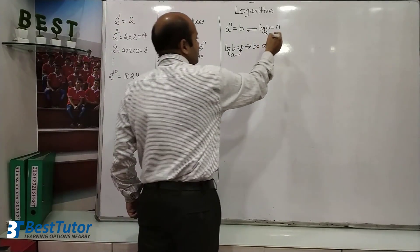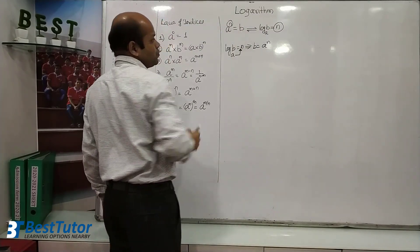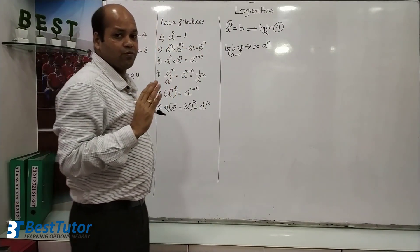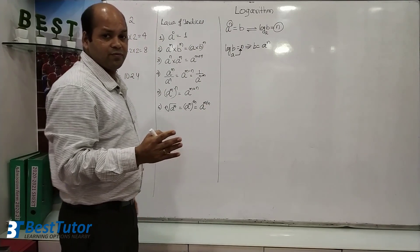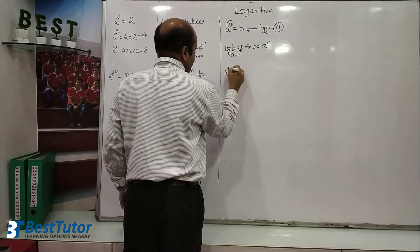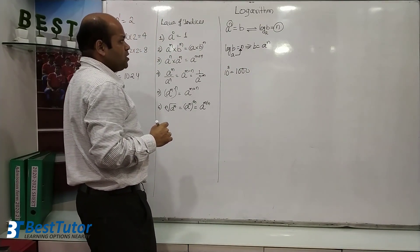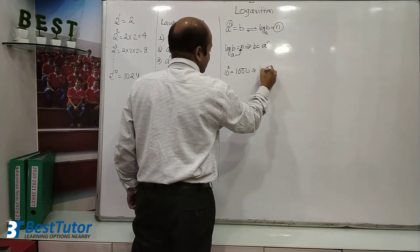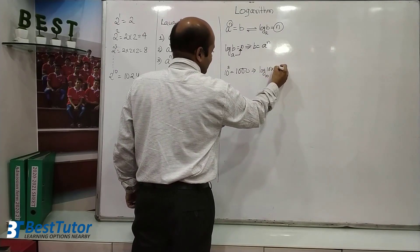What does n represent here? It represents the power. Basically, logarithm is giving you the power value. If you remember that — logarithm is the power value — you will be able to solve questions. For example, if I say 10 cubed is equal to 1000, how do you write it in logarithm form? It will become: log of 1000 to the base 10 is equal to 3. Here 10 is the base and 3 is the power.